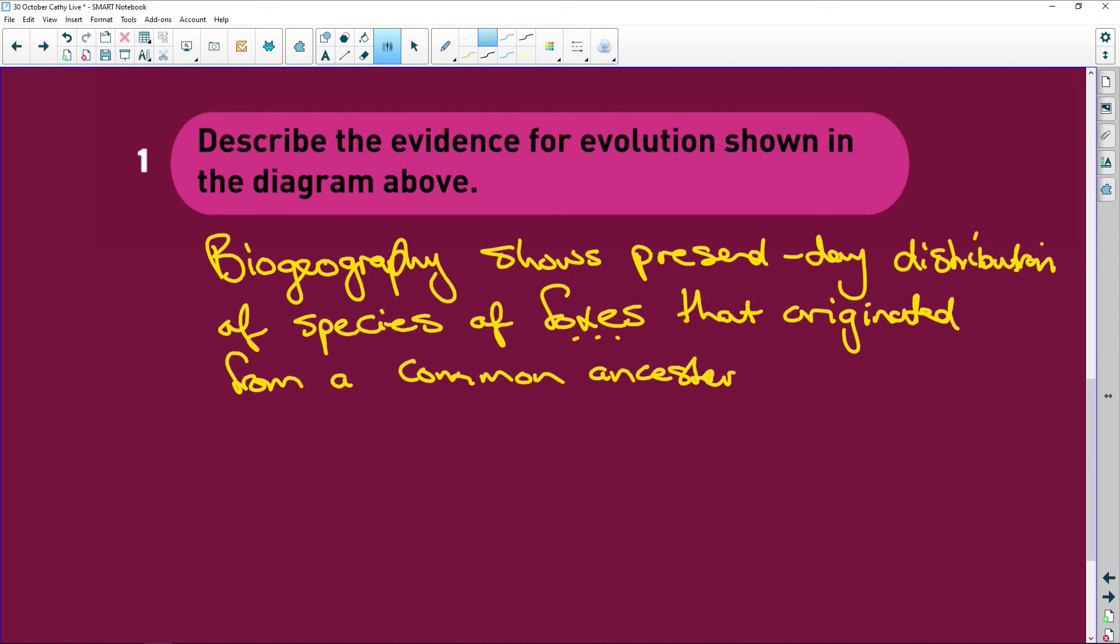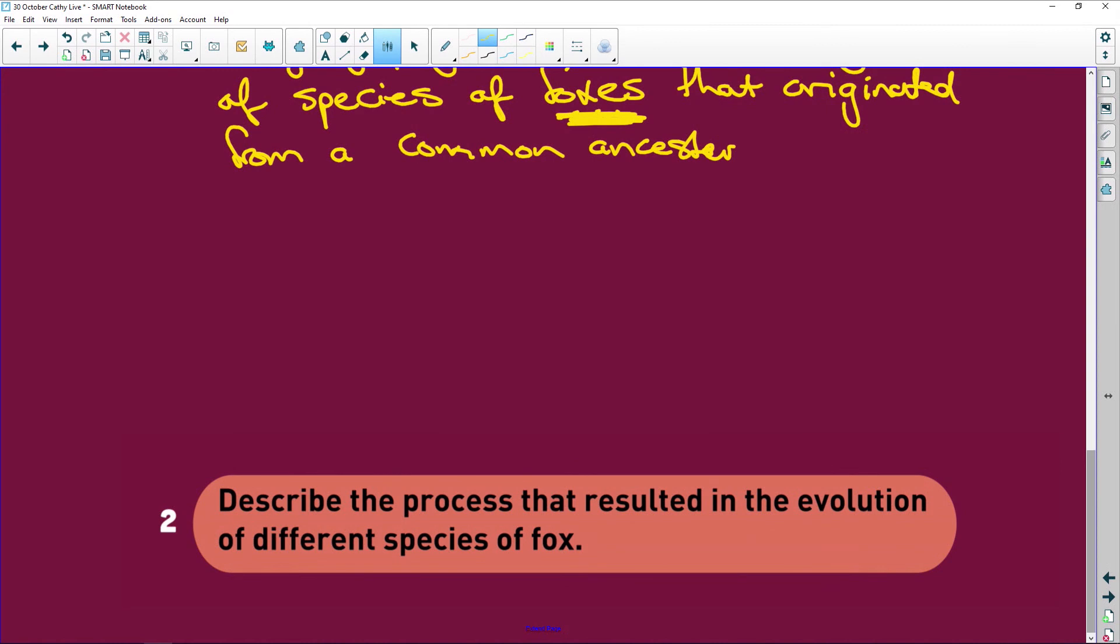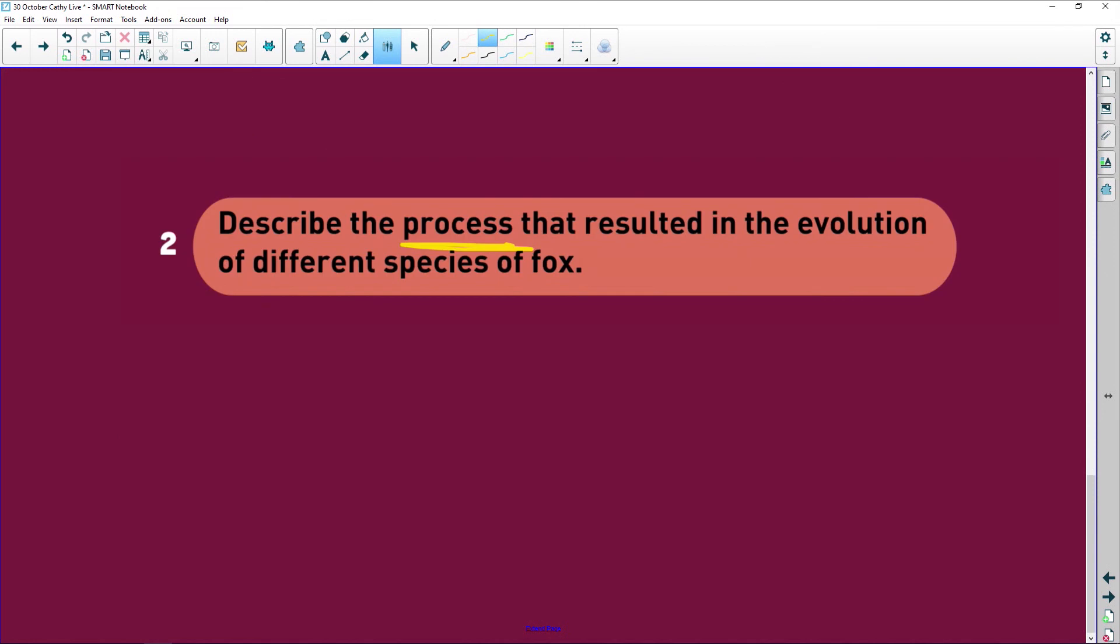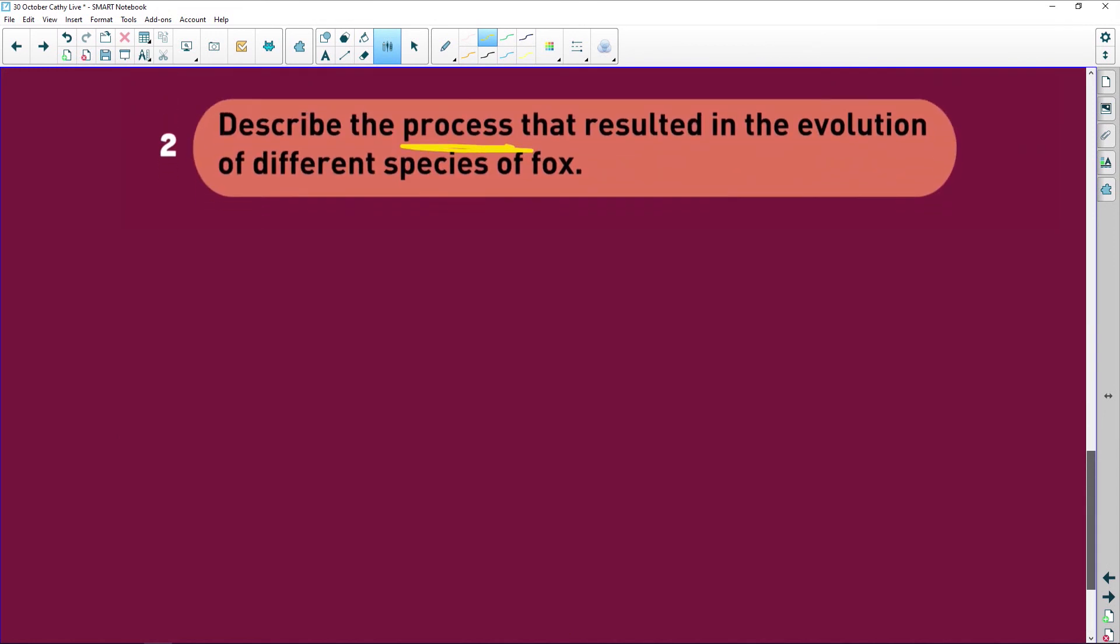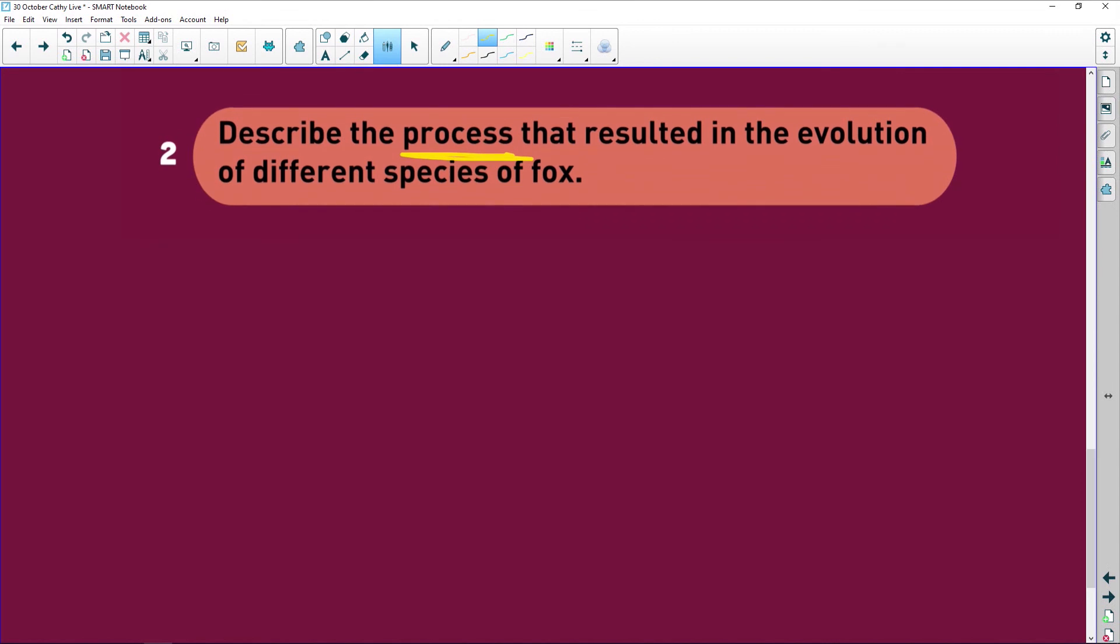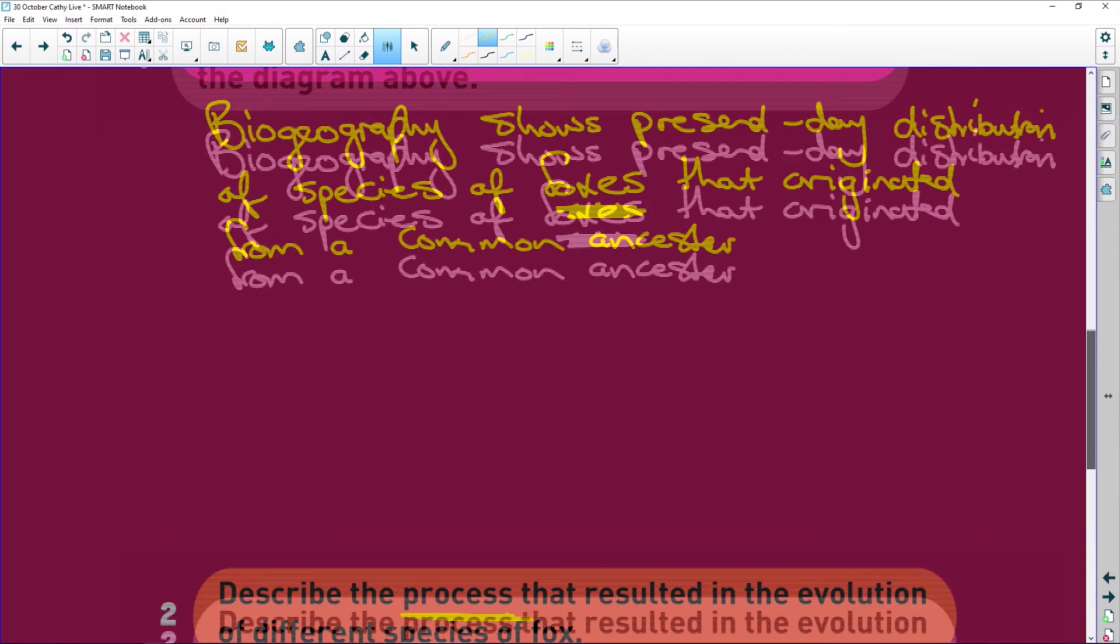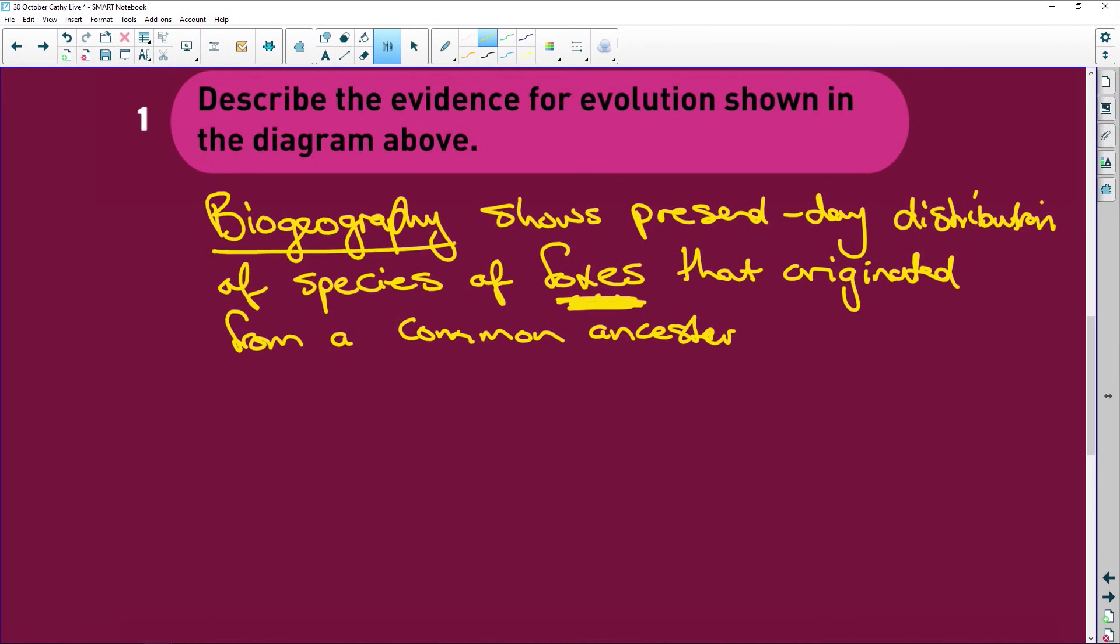Depending on what organism they give you, you're going to write that in here. Now it says describe the process that resulted in the evolution of the different species of foxes. It could be the different species of horses, lions, cheetahs, ostriches, whatever. It's going to be the same. Remember biogeography is one form of evidence. What are the different types of evidence that we have?